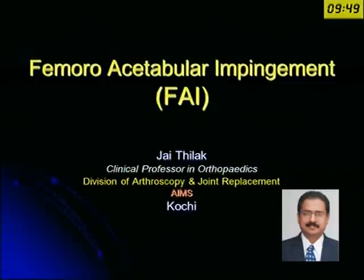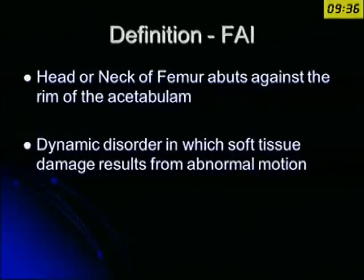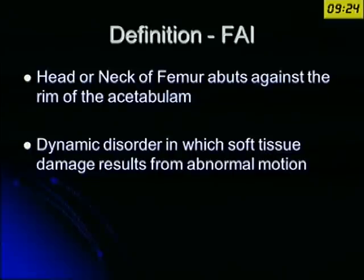As far as the trainees are concerned, if you get a topic or a short note on femoral acetabular impingement, you should be talking on the current thinking of what happens in a normal hip with this particular situation when there is an impingement. If you define femoral acetabular impingement, it is when the head or the neck of the femur abuts against the rim of the acetabulum — that's what we call impingement. It is a dynamic disorder which results in soft tissue damage because of this abnormal motion.